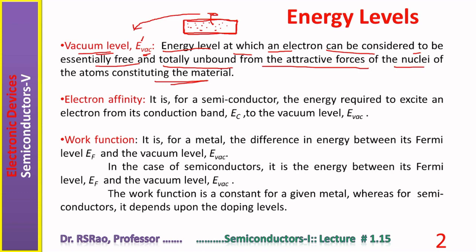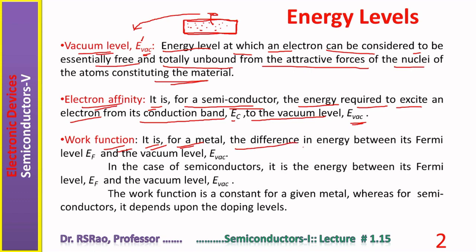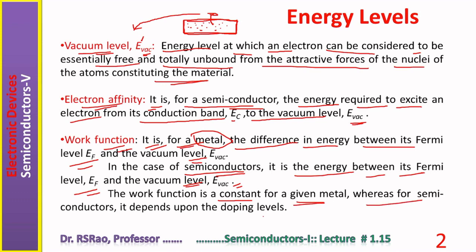The energy required to make electrons come out of the material boundary is the vacuum level energy. Electron affinity is, for a semiconductor, the energy required to excite an electron from its conduction band E_C to the vacuum level E_vac. Work function is, in the case of a metal, the difference in energy between its Fermi level E_F and vacuum level E_vac. For semiconductors, work function is similarly the energy between the Fermi level E_F and vacuum level E_vac.